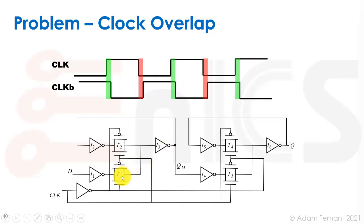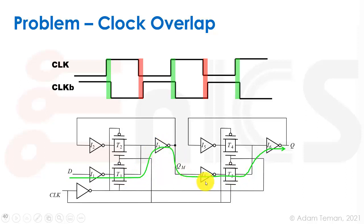When both of them are positive or both of them are negative, what happens is we actually get the situation where both the transmission gate at the input to the flip-flop and at the output to the flip-flop are open at the same time, and then we have a feed-through path from D to Q, making this behave as a latch for this short period of time. That is something that we do not want.